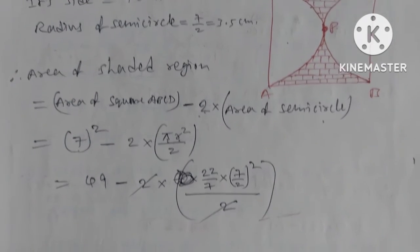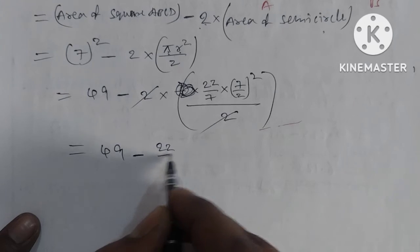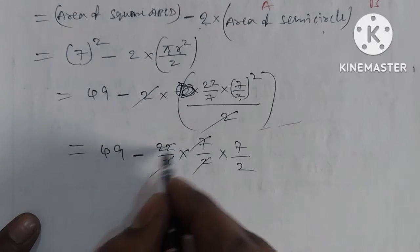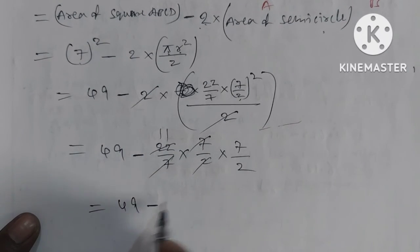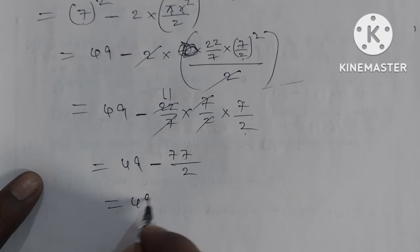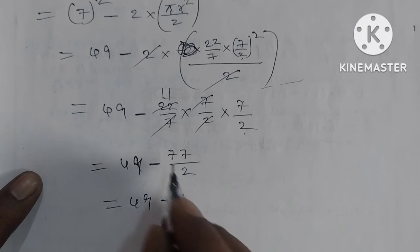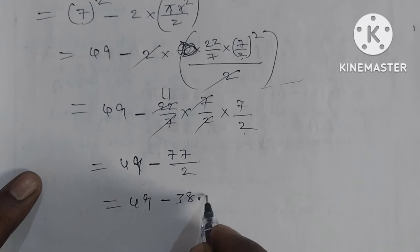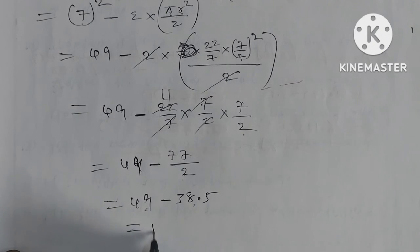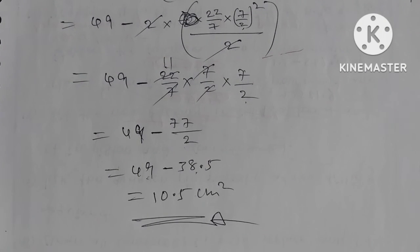Continuing the simplification: 49 − (22/7) × (7/2)² = 49 − 11 × 7/2 = 49 − 77/2 = 49 − 38.5. So 49 − 38.5 = 10.5 square centimeters. This is the area of the shaded region — the answer.